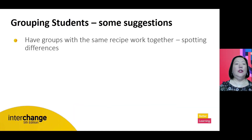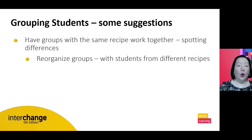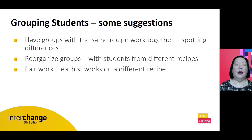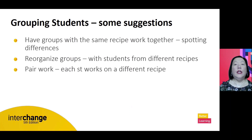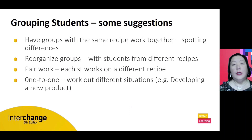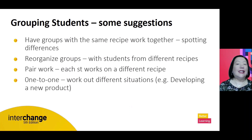Once they finish, you can have groups who worked with the same recipe together so they can spot the differences, or reorganize groups with people who worked on different recipes so they exchange information. If you have two or three students, have each work on a different recipe and then discuss. If you have only one student, have them work out a different situation — for example, depending on their line of work, ask them to develop a new product like a new snack, a new car, or a new hamburger.